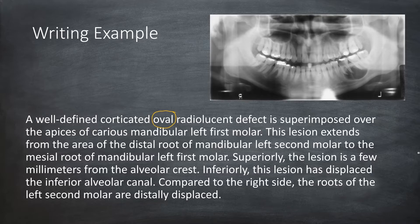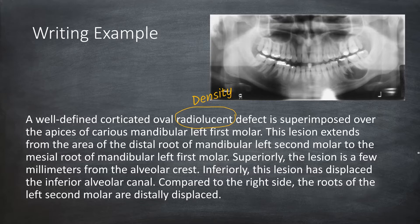The word 'oval' describes the shape of the lesion. Typically a cyst is circular or oval, and some benign tumors may also be circular or oval. The word 'radiolucent' describes the density of the lesion. By now, using a few words, we have described the border, shape, and density. Using the word radiolucent, we are already thinking of a lesion that has fluid or soft tissues — we are not thinking of an osseous or fibro-osseous lesion.